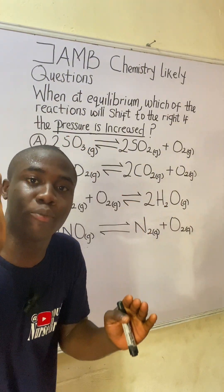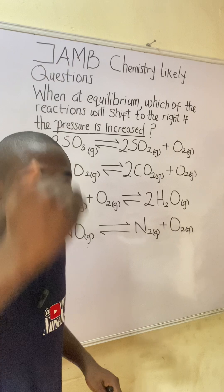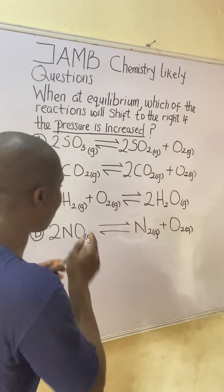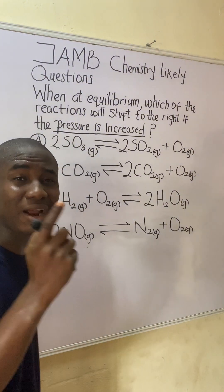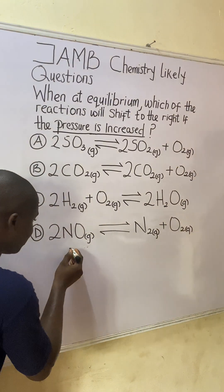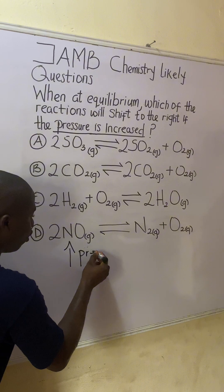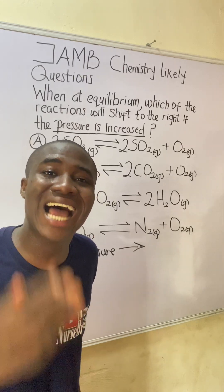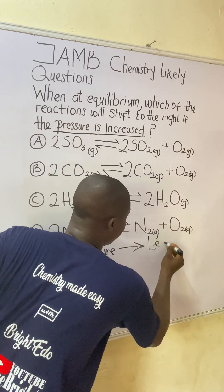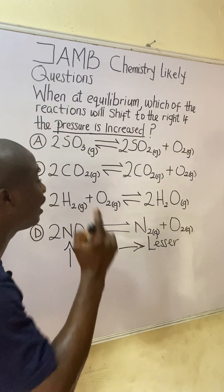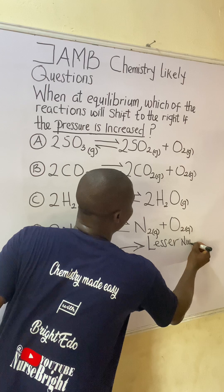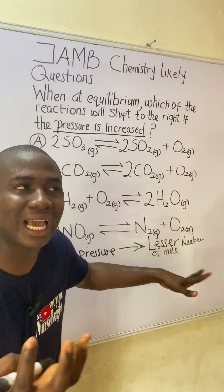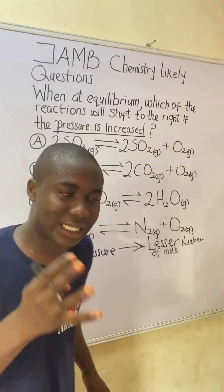Whenever pressure is increased in a particular reaction, it implies something important. Increase in pressure favors the reaction side with the lesser number of moles. Please note this: whenever pressure is increased in a reaction, it favors the reaction side with the lesser number of moles. I can also use the word 'volume' to replace 'moles,' because Boyle's Law states that pressure is inversely proportional to volume.